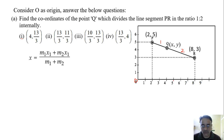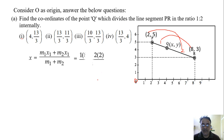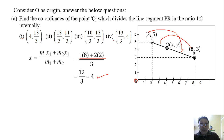According to the section formula, x = (m1·x2 + m2·x1) / (m1 + m2). So that is 1 into the x-coordinate of the second point plus 2 into the first x-coordinate, upon the sum of the ratio. That gives us (1×8 + 2×2) / (1+2) = (8 + 4) / 3 = 12/3 = 4. Now in the options, only one option has x-coordinate equal to 4, so we can identify the correct answer is the first option.